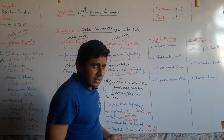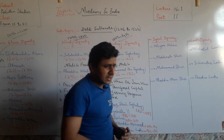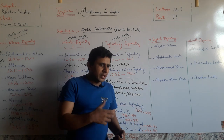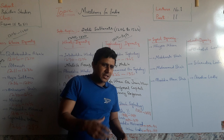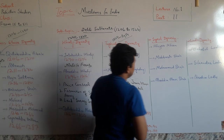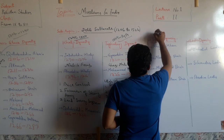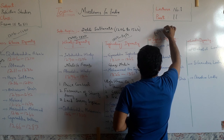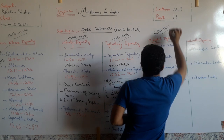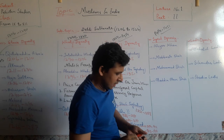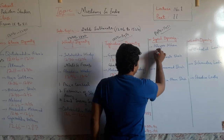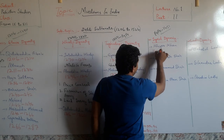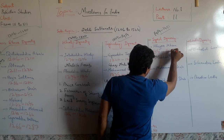After the Tughlaq dynasty, the Sayyad dynasty was a relatively peaceful dynasty. There was no significant development, expansion, or conquest during this period. The Sayyad dynasty was founded in 1414 and lasted until 1451. Khizar Khan was the founder of the Sayyad dynasty and ruled from 1414 to 1421.